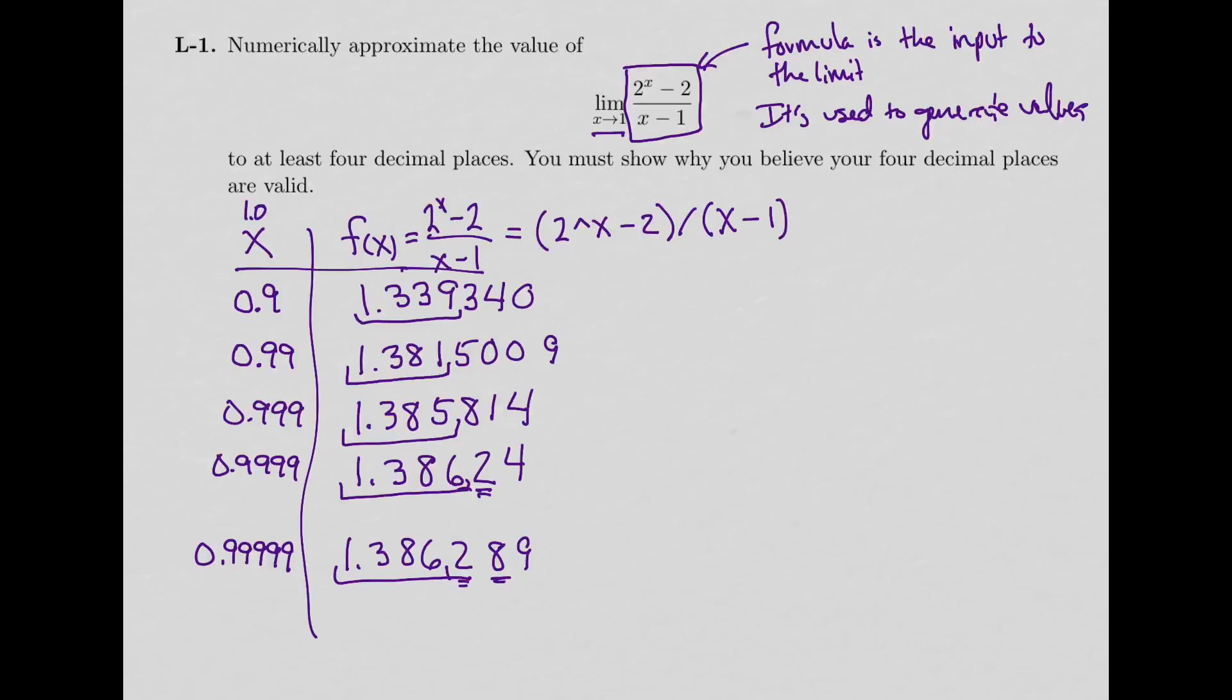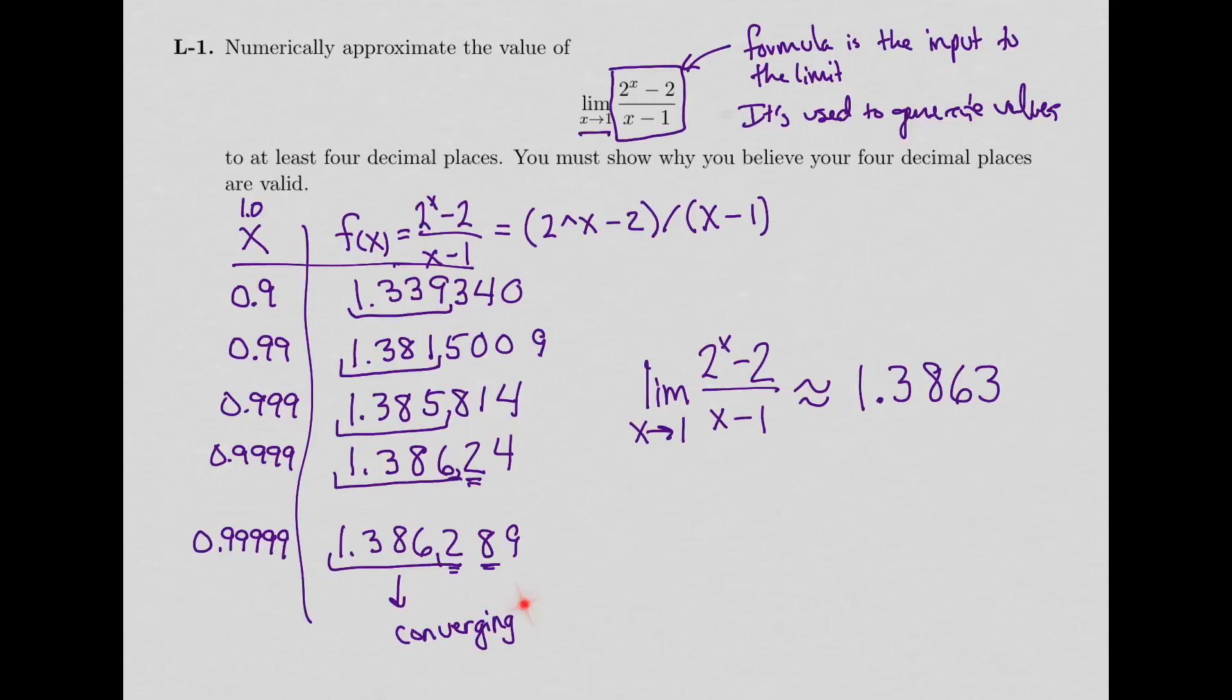But I've got a pattern that it's approximately, so we can now finish our statement. The limit of my formula, this is my function, when x gets closer and closer to 1, is approximately, and we don't know exactly the value because we only have a table here, 1.3863. And so my digits are converging. They're no longer changing. The closer I'm getting to 1 in my x's, the closer this is to not changing anymore. That's the idea of numerically approximating a limit.